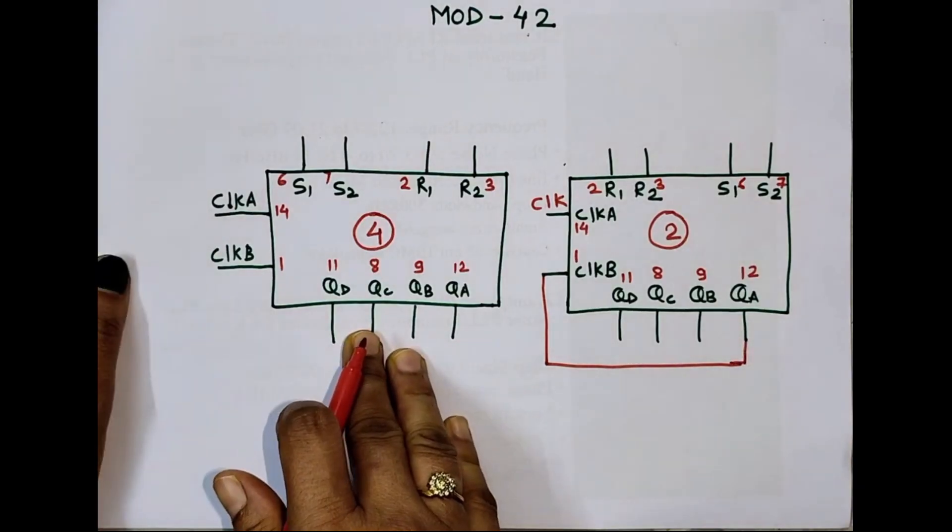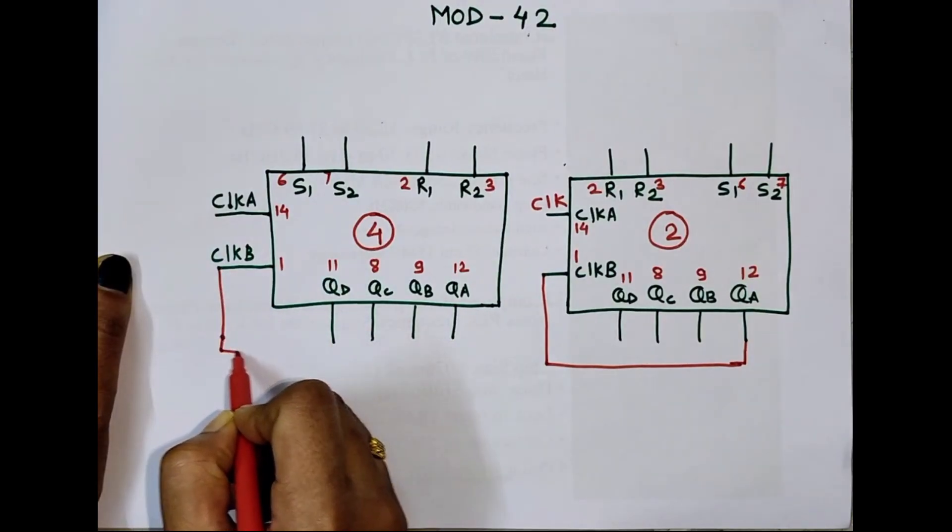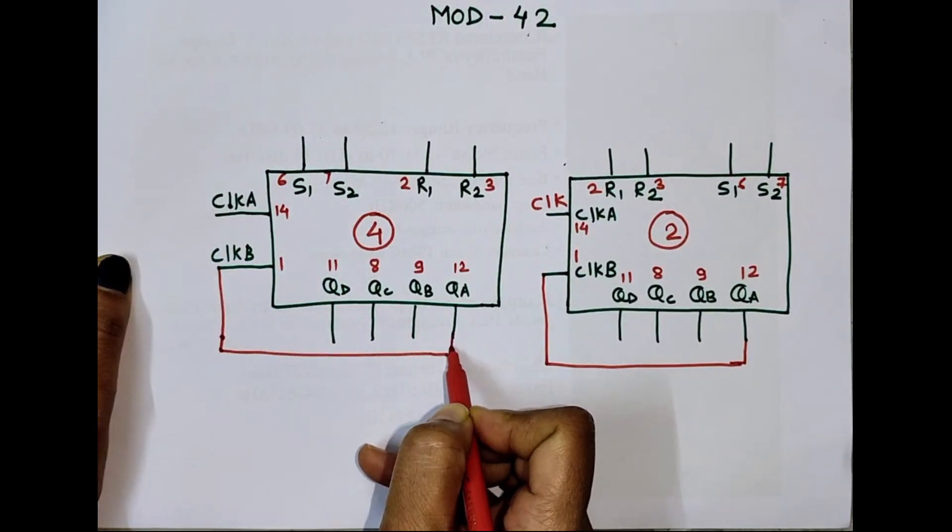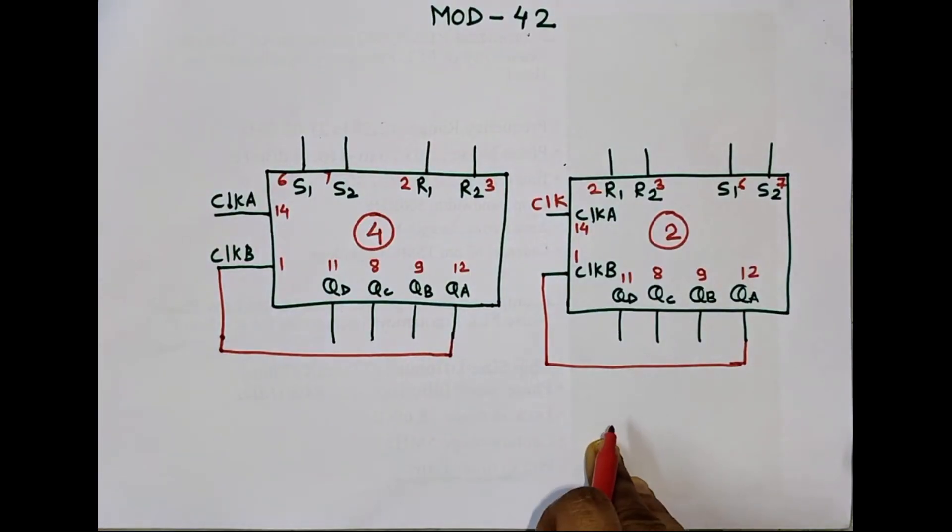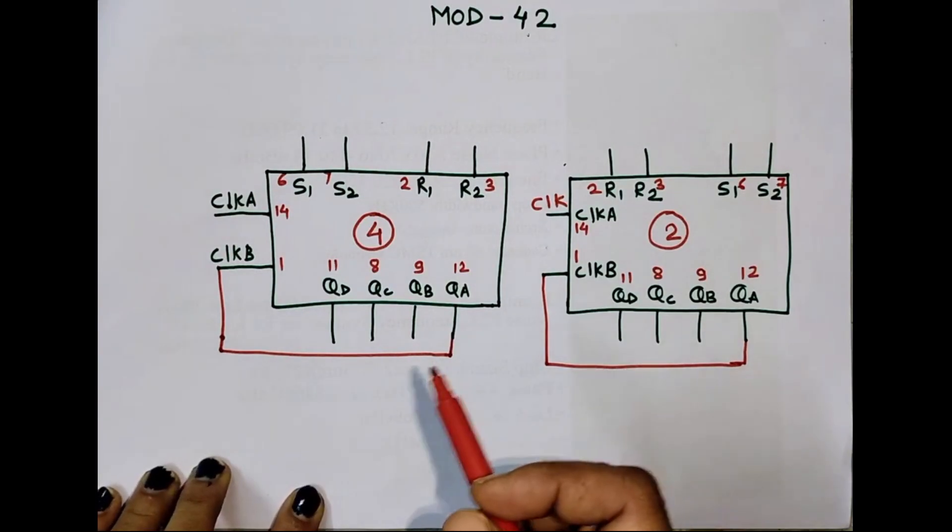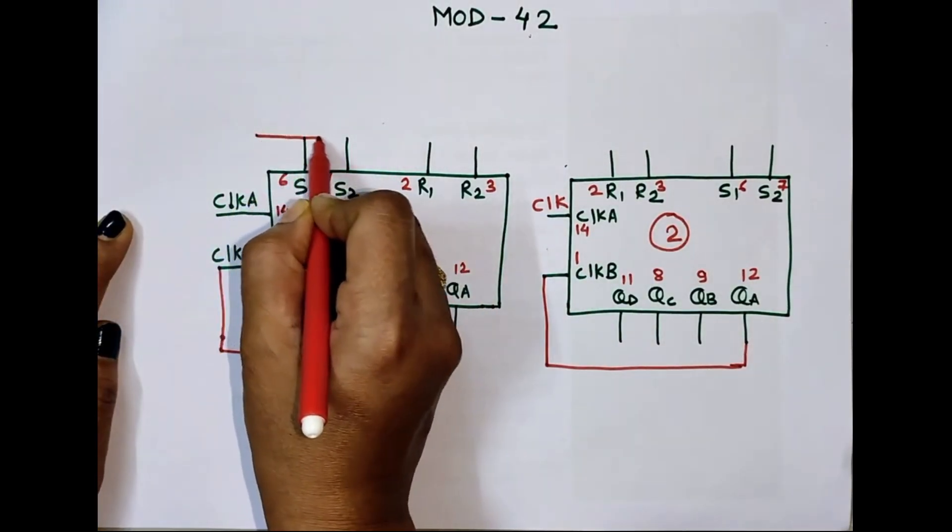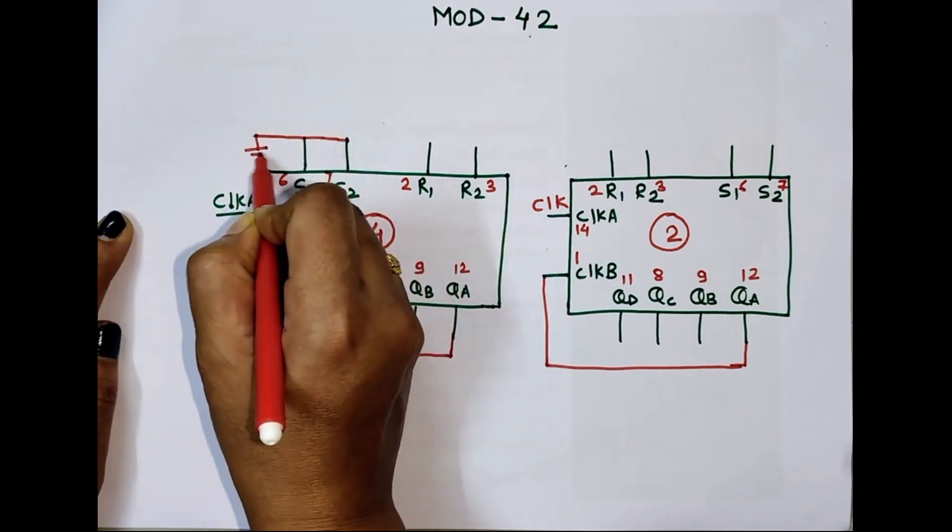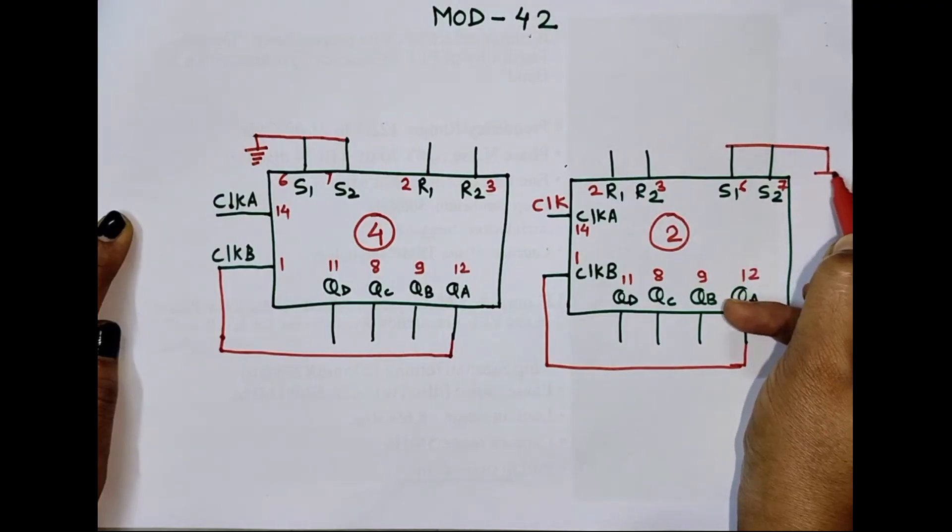Similarly, here also this QA will get connected to Clock B. Next is reset pins are connected to ground, pin number 6 and 7, pin number 6 and 7 to ground, here also.